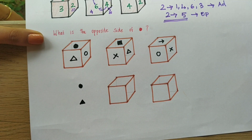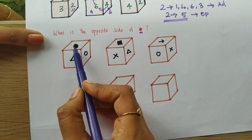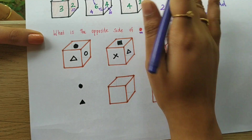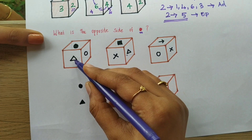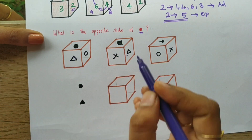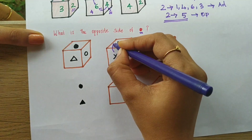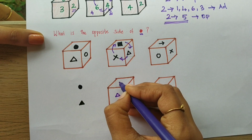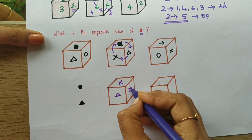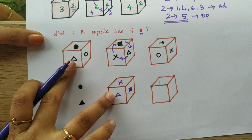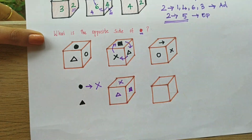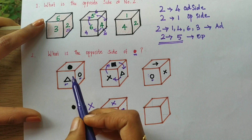Let's move to the next problem, which uses shapes. They're asking us to find the opposite of a particular shaded circle. The same trick applies — we need to move the triangle to the same position as in the other cube. Moving it clockwise or anti-clockwise, all symbols must move in the same direction. Triangle comes here, cross goes here, shaded square comes here. Now it has the same side aligned — so the opposite of the shaded circle is the cross symbol.